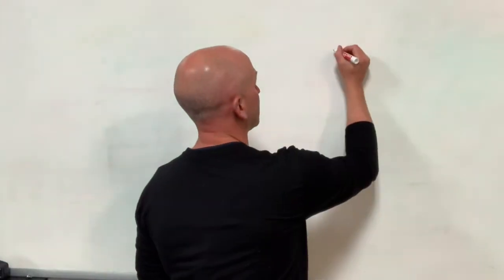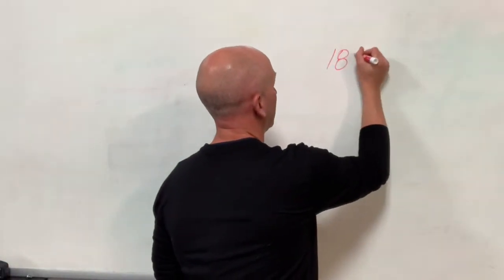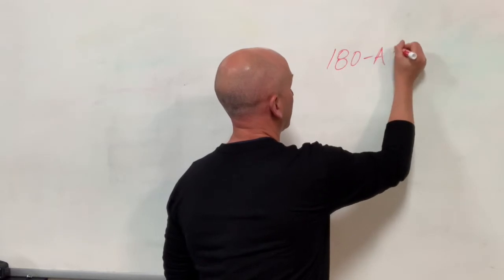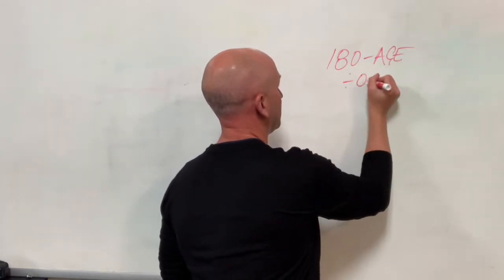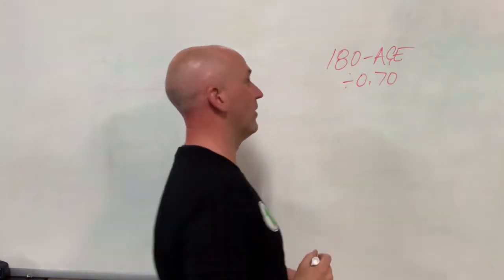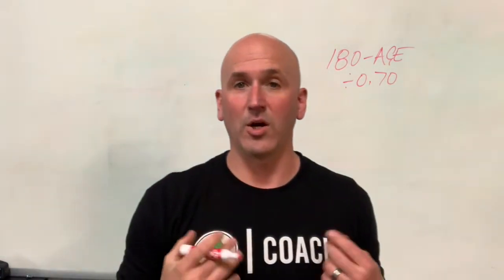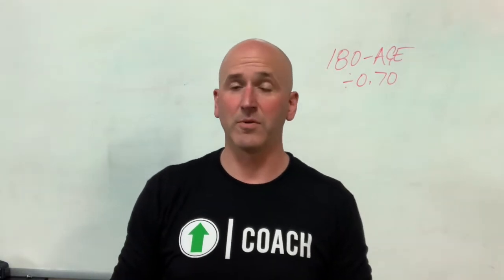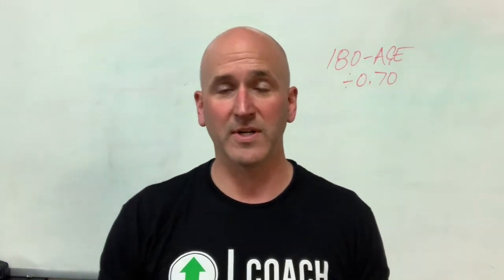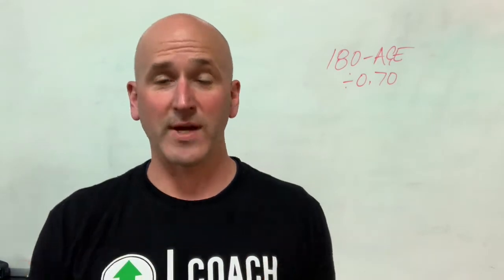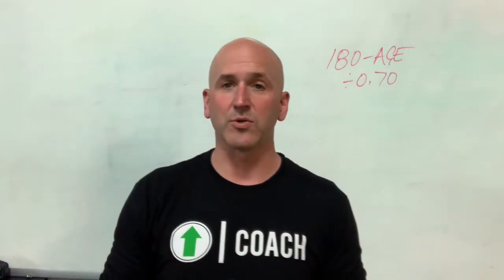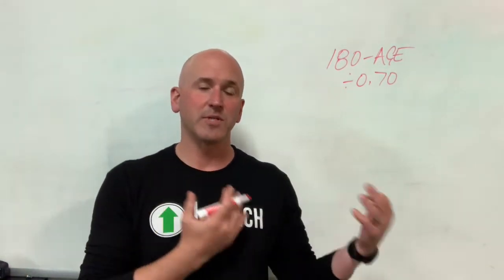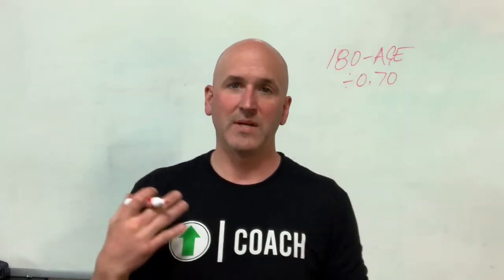We have a formula written on the board in our main gym at Catalyst, which is this: 180 minus age, divided by 0.70. This is our max heart rate formula. It's developed by a guy named Dr. Phil Maffetone. The Maffetone Method is a great book — if you haven't picked that one up yet, it's a great place to start and a great resource for your coaches to explain what we're trying to do in the gym simply.